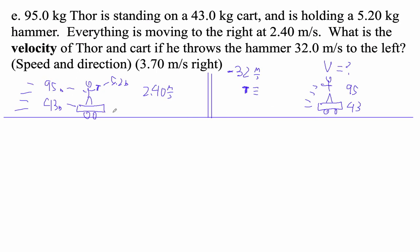So let's figure this out. The total mass here is 95 plus 43 plus 5.2. 95 plus 43 plus 5.2 is 143.2 kilograms of stuff here. The hammer is 5.2 kilograms.